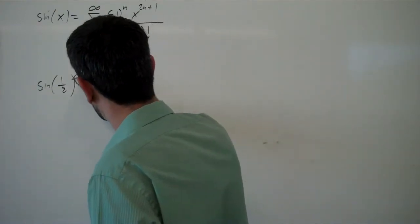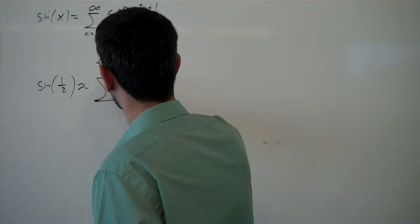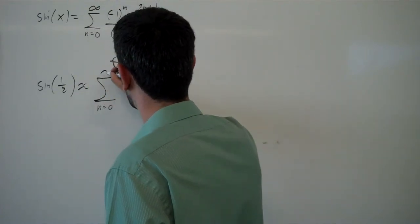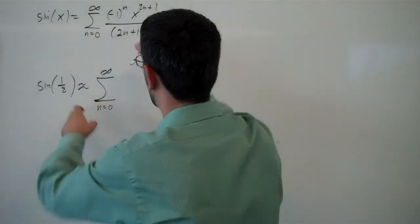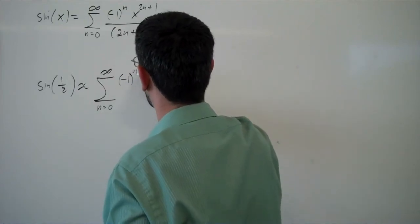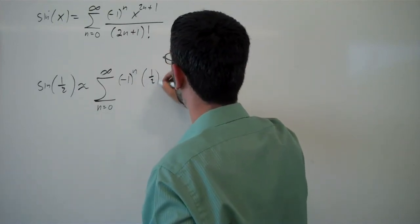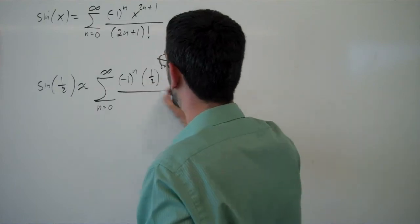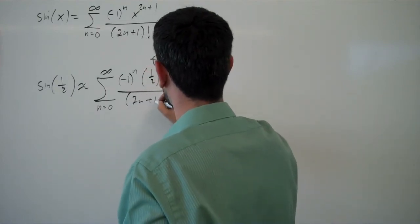And so for this, we're going to start by plugging in the value of a half for x. So we've got negative 1 to the n, one half to the 2n plus 1 over 2n plus 1 factorial.